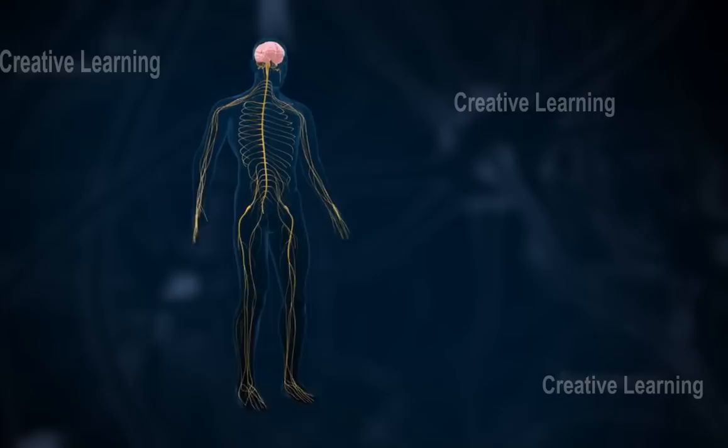Summary: The brain and the spinal cord comprise the central nervous system. The brain is located in the cranium. The spinal cord is located in the vertebral column.